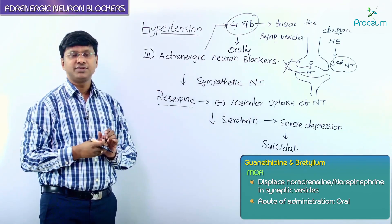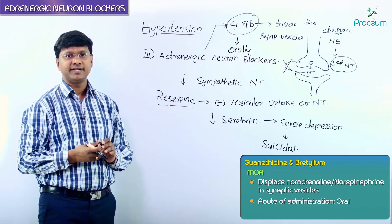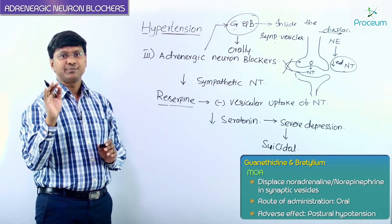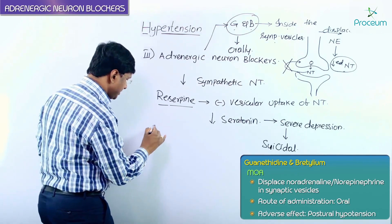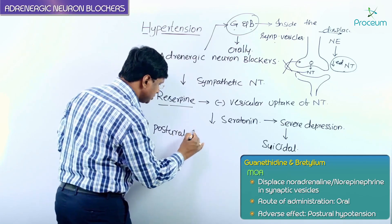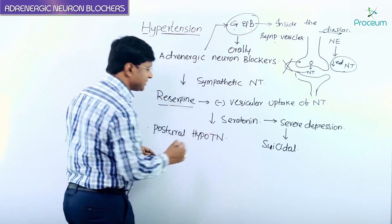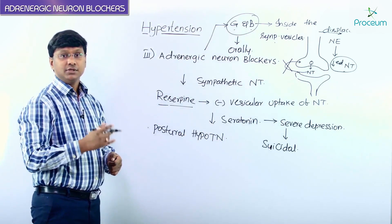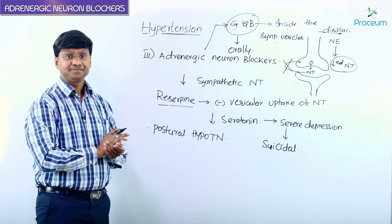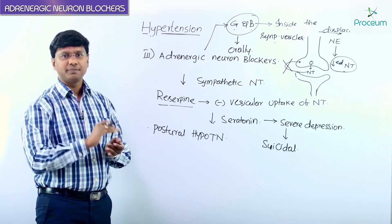An important problem with the adrenergic neuron blockers — guanethidine and bretylium — is that these drugs can cause postural hypotension. This postural hypotension is caused by these drugs even when they are used for a prolonged period.